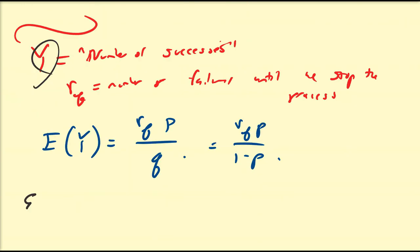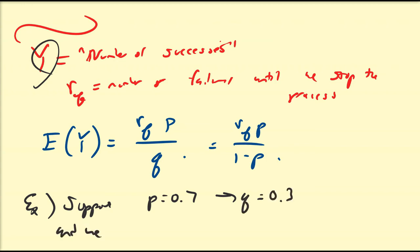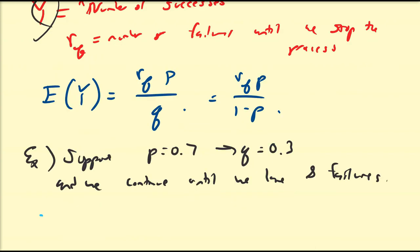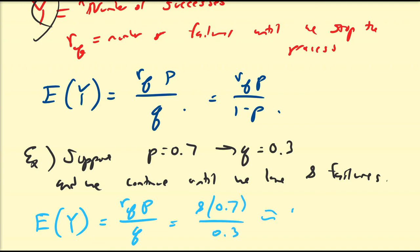For example, suppose the probability of success is 0.7 (so probability of failure is 0.3) and we continue until we have 8 failures. Then the expected number of successes is 8 × (0.7/0.3) ≈ 18.67. So we expect approximately 19 successes before accumulating 8 failures — which makes sense given the high probability of success.